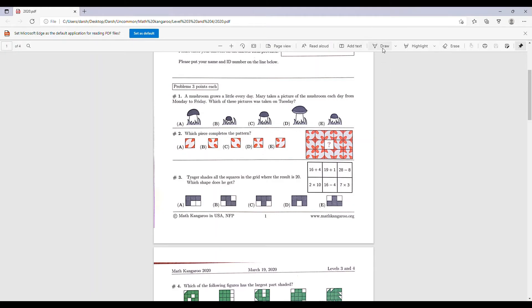Let's start with number 1. A mushroom grows a little every day. Mary takes a picture of the mushroom each day from Monday to Friday. Which of these pictures was taken on Tuesday? So Monday to Friday that's 5 days. When the mushroom is the smallest it'll be Monday, and when the mushroom is the largest it'll be Friday.